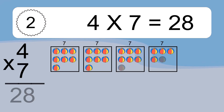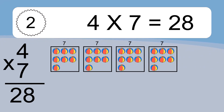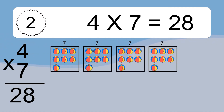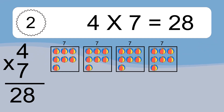4 times 7 equals 28. We have 4 boxes and each box has 7 colorful balls inside. If you count all the balls in all the boxes together, you will have 4 times 7 balls. This equals 28 balls.